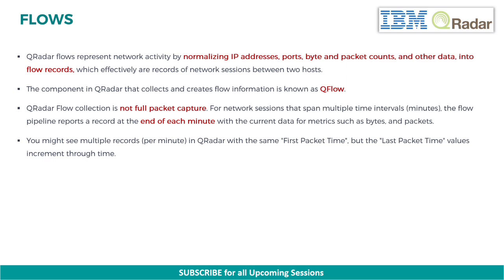QRadar flows represent network activity by normalizing IP addresses, ports, byte and packet counts, and other data into flow records, which effectively are records of network sessions between two hosts. The component in QRadar that collects and creates flow information is known as Q-Flow.